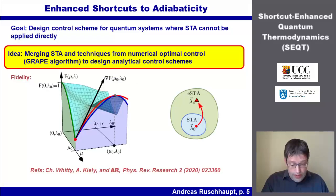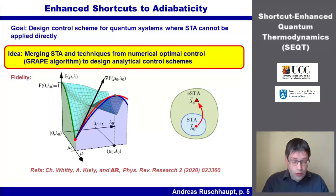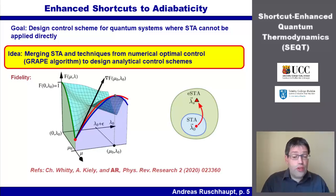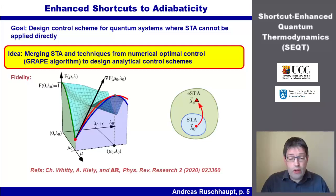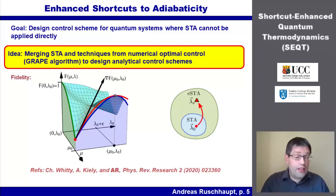The first goal is to design control schemes for quantum systems where up to now STA techniques could not be applied to directly. A step in this direction is a new technique called enhanced shortcuts to adiabaticity. Its basic idea is to merge STA techniques with ideas from numerical optimal control, especially from the GRAPE algorithm.